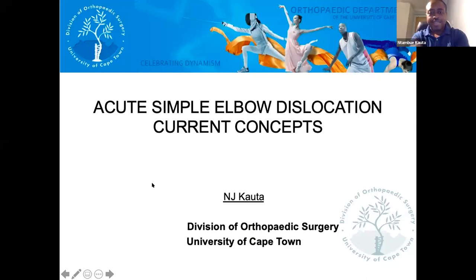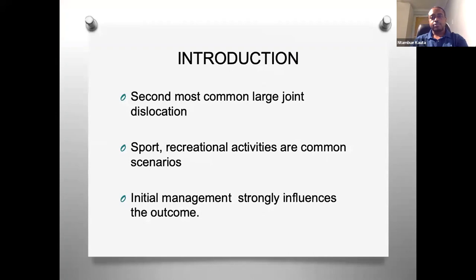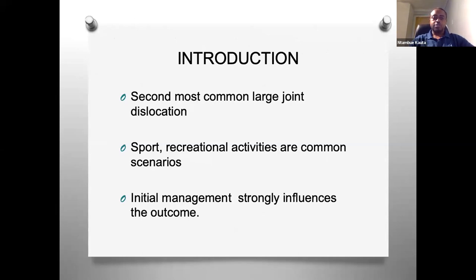Good evening. Welcome to this tutorial shared by Professor Roch. I'll be talking about acute simple elbow dislocation - current concepts. Elbow dislocations rank second among large joint dislocations, after shoulder dislocation. This happens as a sport injury or during recreational activities. What you do to the dislocated elbow at the initial setting will strongly influence the outcome.